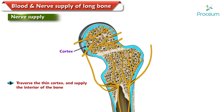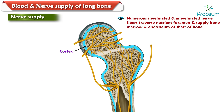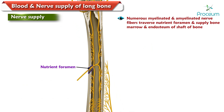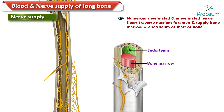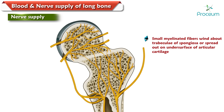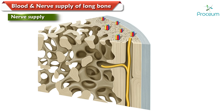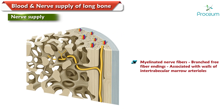Small myelinated and amyelinated nerve fibers enter the numerous foramina of the epiphyseal and metaphyseal regions of the long bones, traverse the thin cortex, and then supply the interior of the bone. Numerous myelinated and amyelinated nerve fibers traverse the nutrient foramen and supply the bone marrow and endosteum of the shaft. Small myelinated fibers wind about the trabeculae of the spongiosa or spread out on the undersurface of the articular cartilage, with small knob-like nerve endings terminating in close relationship to the endosteum.